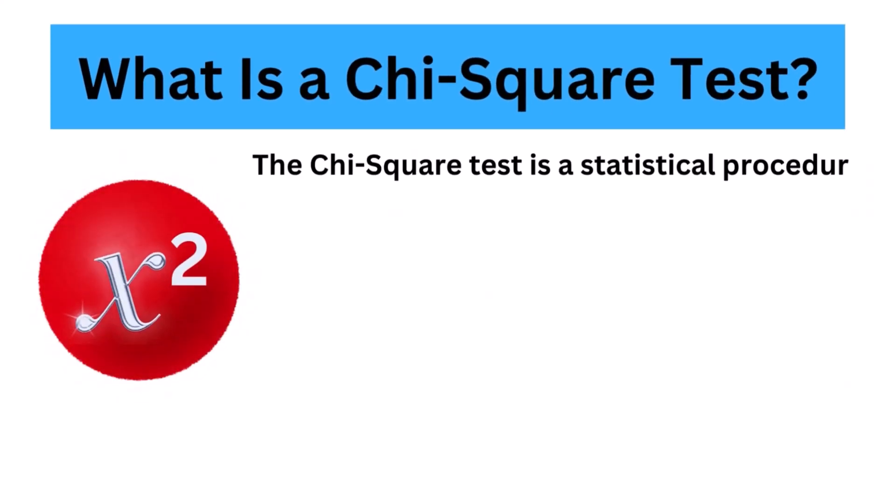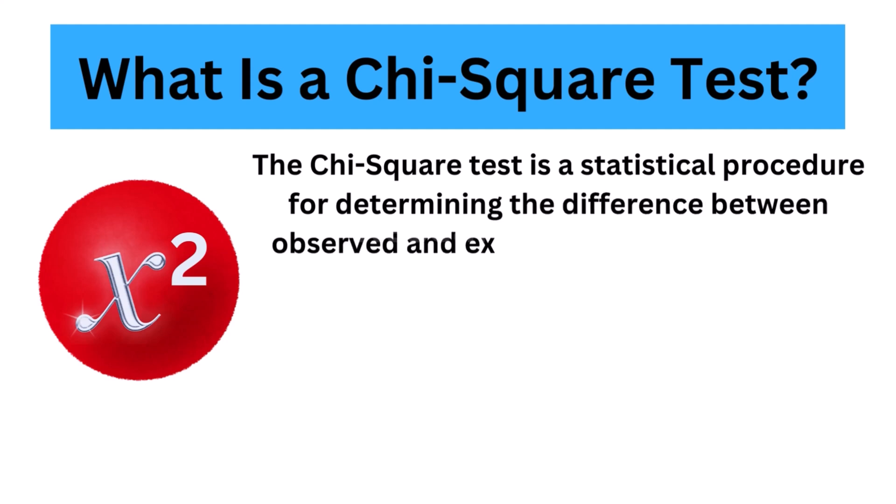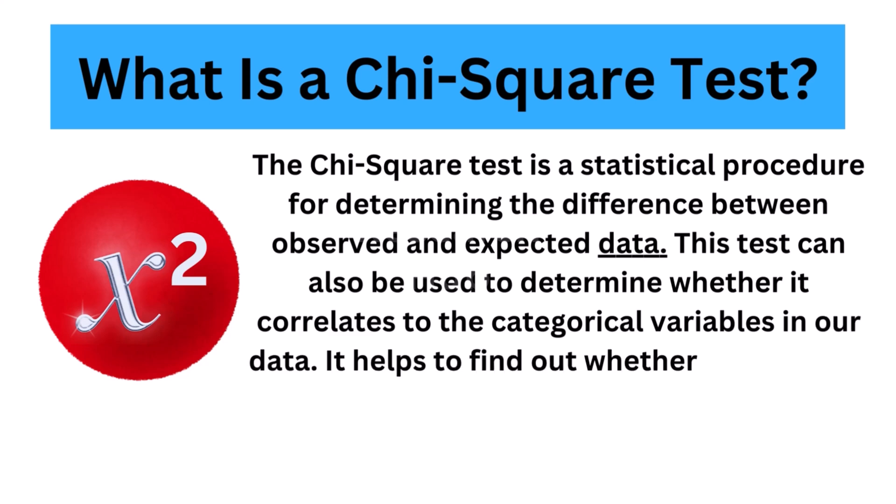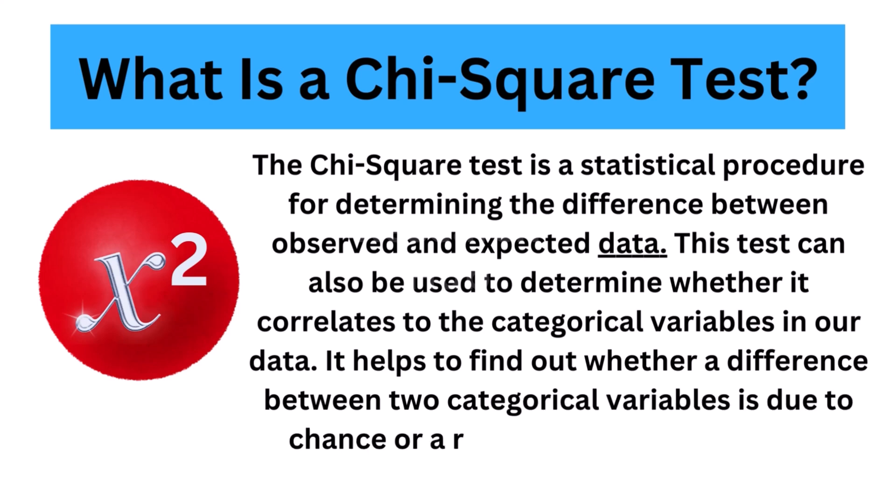The chi-squared test is a statistical procedure for determining the difference between observed and expected data. This test can also be used to determine whether it correlates to the categorical variables in our data. It helps to find out whether a difference between two categorical variables is due to chance or a relationship between them.